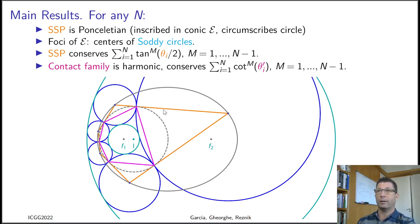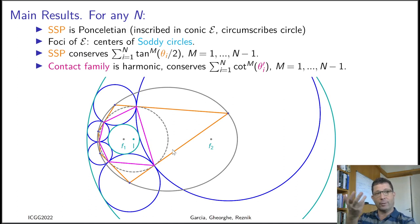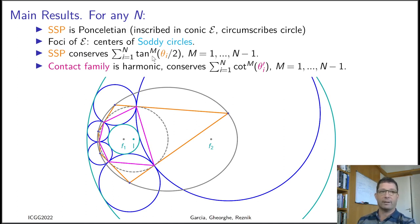Also very interestingly, this family of orange polygons conserves a curious quantity: if you call its internal angles θᵢ, the family conserves the sum of tangents of the half-angles. As the family changes geometry over the Porism, the sum of tan(θᵢ/2) is conserved. In fact, you can raise the tangents to a power m, where m is an integer from 1 to n−1 — so it conserves the sum of squared half-angle tangents, cubed half-angle tangents, and so on.